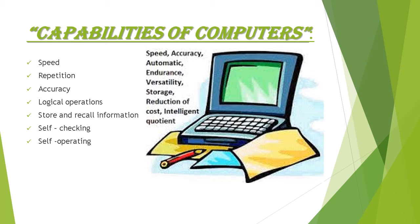The next capability is repetition. When humans perform the same task repeatedly, they get tired or bored. But a computer never gets bored or tired from doing the same task again and again. The next capability is accuracy — accuracy means how error-free your results are, how close the result is to the true value.